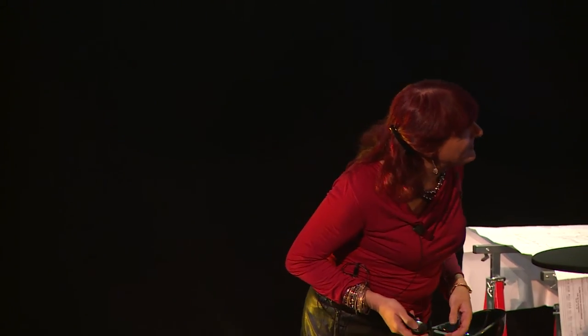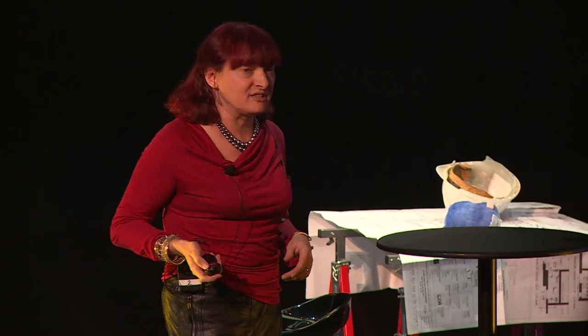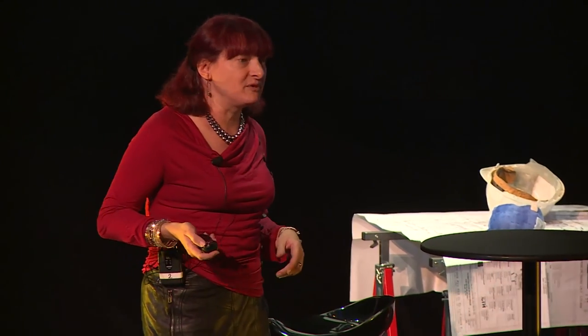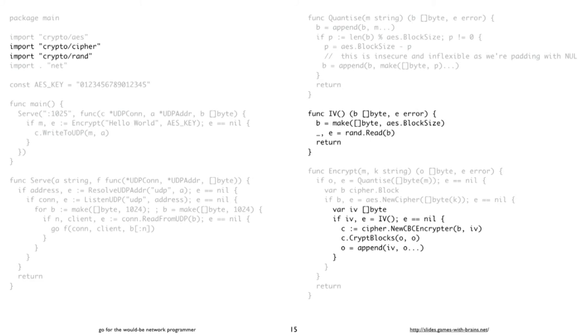We have to do a horrible thing called quantizing when we're doing crypto, which means basically we have to make sure our blocks are the right size, or people can perform nasty attacks on the last block of our message. Apart from that, we need a source of randomness that we're going to shove in, and then we need to do something with the randomness as part of doing the encryption. It's very easy to do.